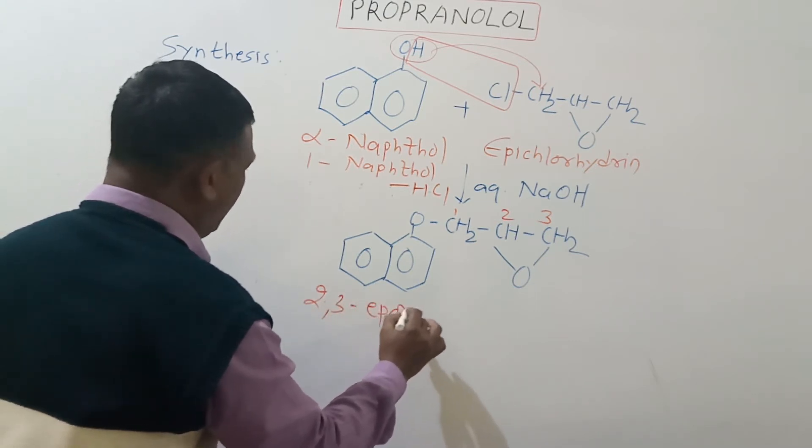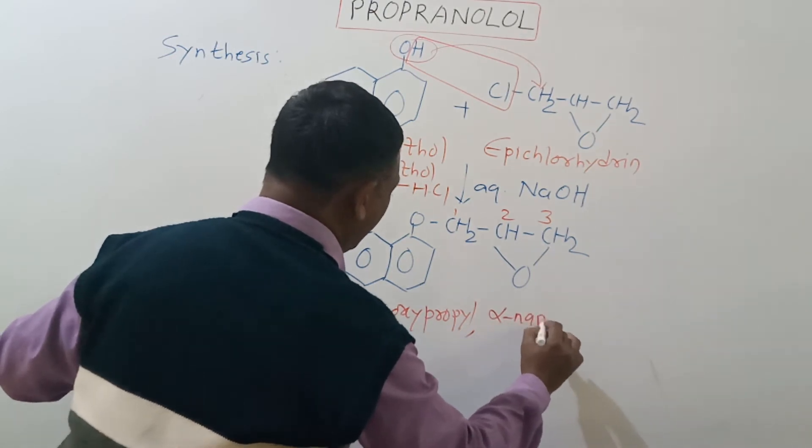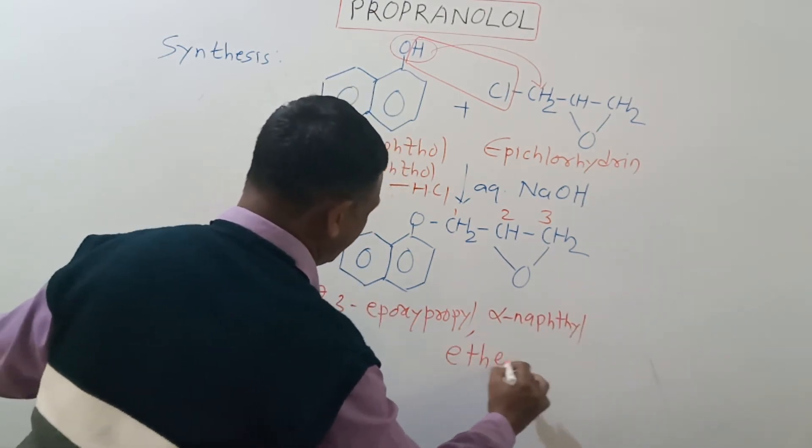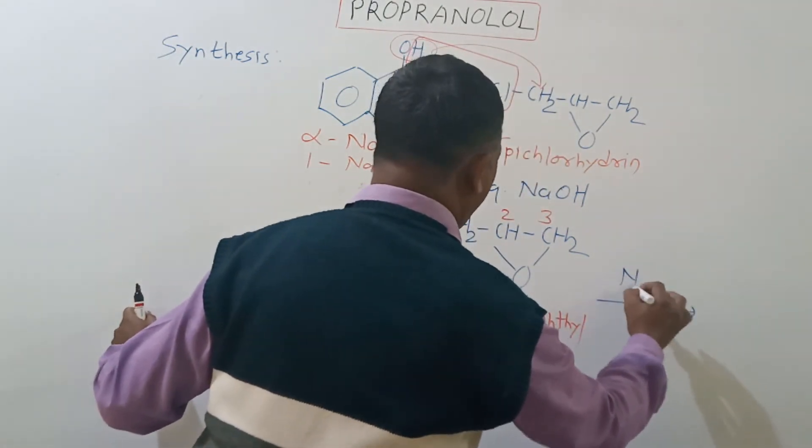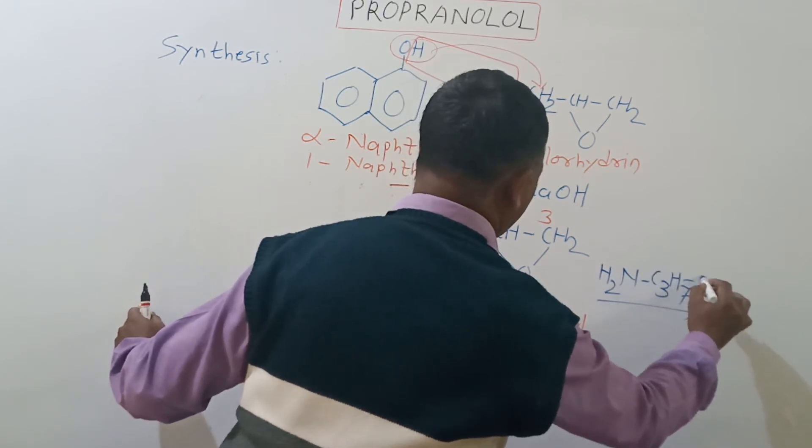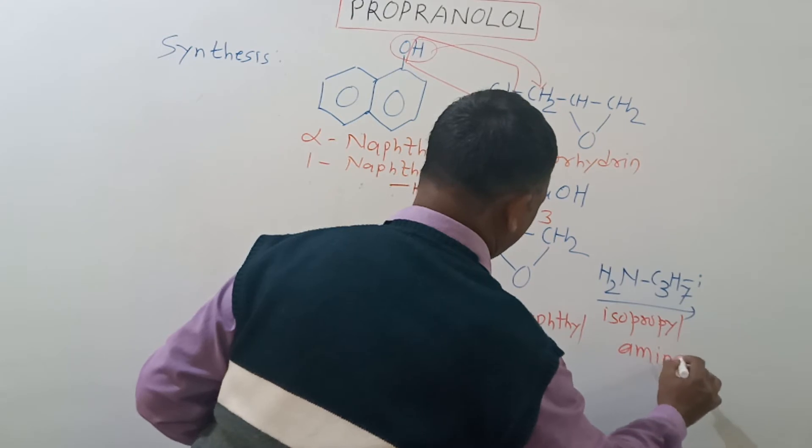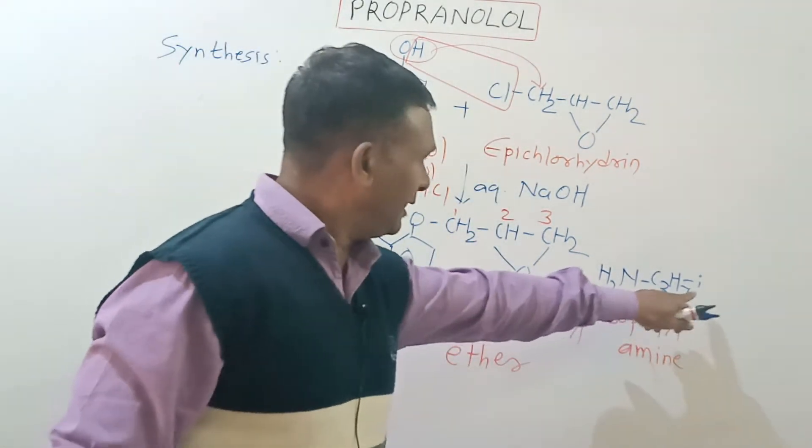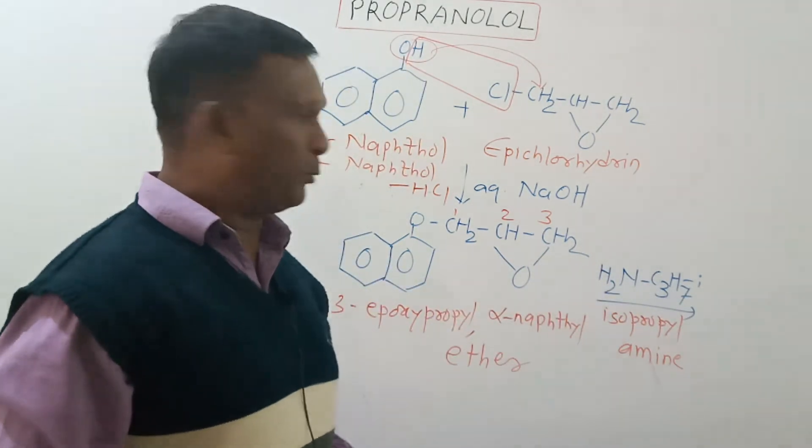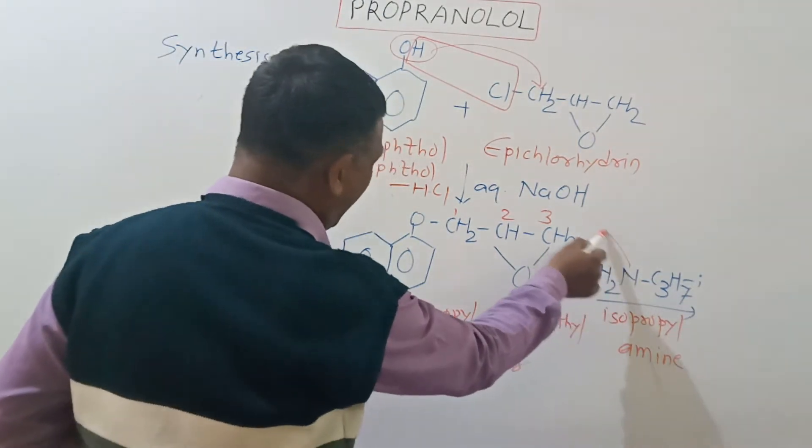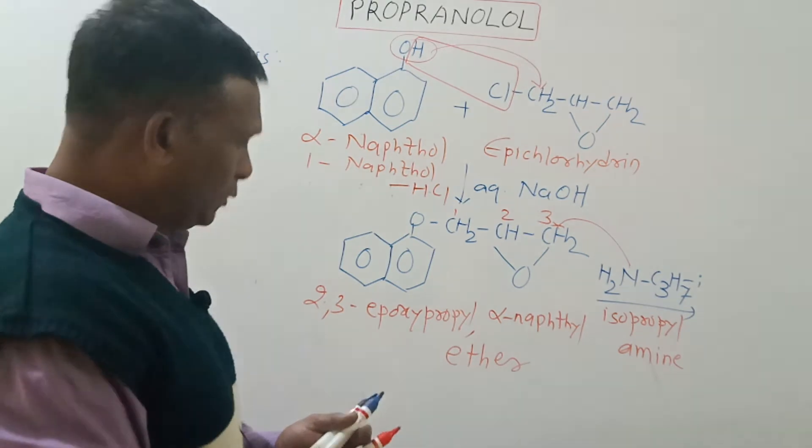This ether then reacted with isopropyl amine. Here the propyl is shown by C3H7 and this 'i' stands for the iso group, so it is simply the isopropyl attached with amino, so it will become isopropyl amine. This amino group attacks on this carbon once again to bring about the nucleophilic reaction.